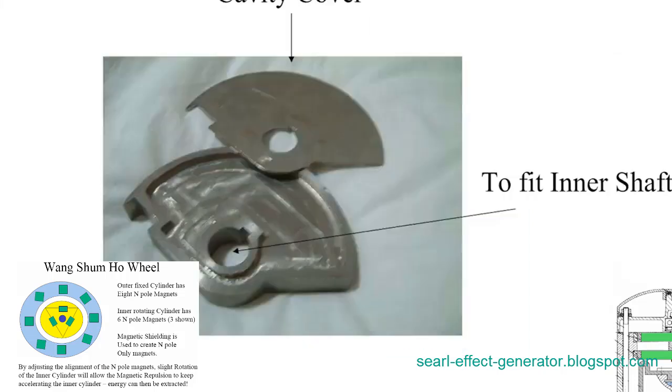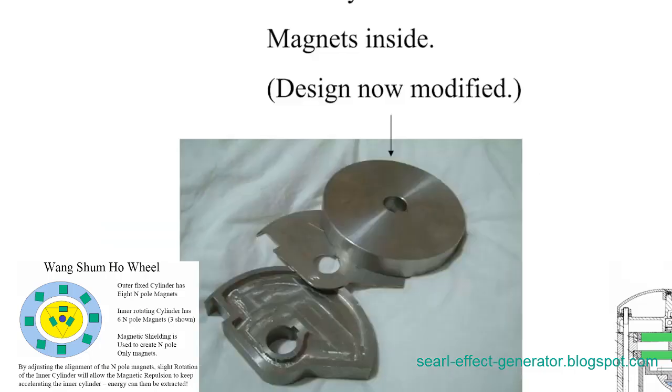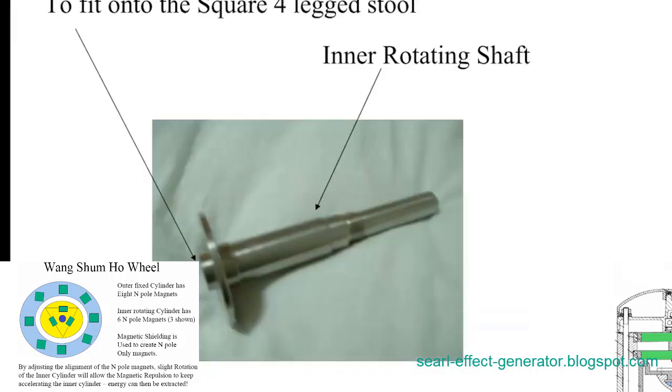This restriction hints at the disruptive nature of Wang's invention, challenging the status quo of traditional power sources. The controversy surrounding the magnetic generator underscores the reluctance of established energy systems to embrace unconventional technologies that threaten the existing paradigm.